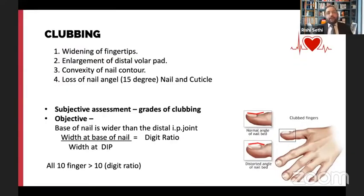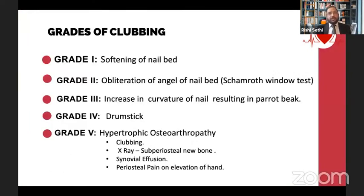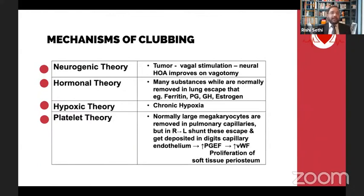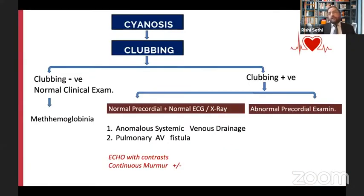The digit ratio is normally the diameter at the base of the nail is narrower than the distal interphalangeal joint. In clubbing, the diameter at the nail bed base increases more than the DIP joint. The ratio of width at the nail bed versus width at the DIP joint is called the digit ratio. If the total digit ratio across all fingers is more than 10, we can objectively say clubbing is present. The grades and causes of clubbing, and its various mechanisms, are in the presentation for reference.